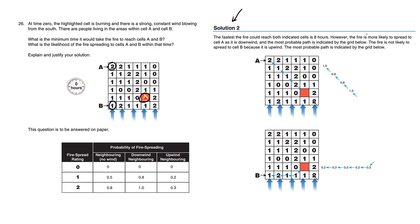However, the fire is more likely to spread to cell A as it is downwind. So this is justification. And the most probable path is indicated by the grid below. So this is the path here. The fire is not likely to spread to cell B because it is upwind. So this is not really being helped by the wind. As you can see, the fire has to actually go upwind, which is going backwards. Whereas downwind is you're going with the flow. The most probable path is indicated by the grid below.